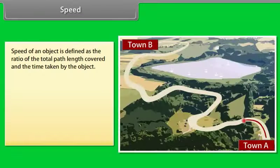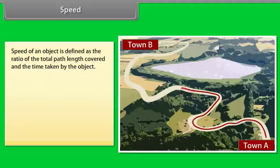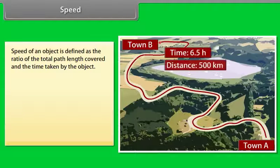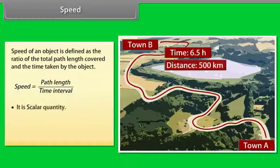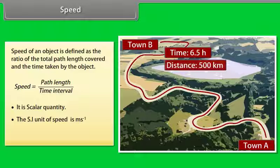Speed: The speed of an object is defined as the ratio of the total path length covered and the time taken by the object. Therefore, speed is equal to path length divided by time interval. It is a scalar quantity. Its SI unit is m·s⁻¹.